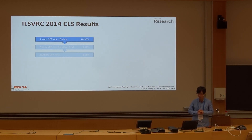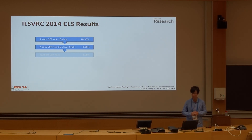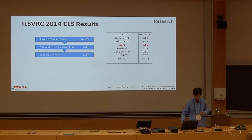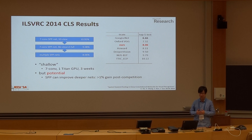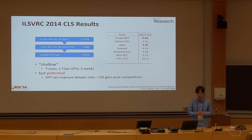For the classification competition, we use the 7-layer convolutional SPPNet, and using the standard 10-crop testing, the error is about 11%. When we significantly increase the number of views and scales, the number reduces to about 9%. After model averaging, the number reduces to about 8%. This is the entry we submitted to the competition, which ranked third. Our network is a relatively shallow one — at least compared with GoogLeNet and Oxford's results — it only has seven convolutional layers, and we can train this model on a single Titan GPU within three to four weeks. Because our network is shallow, we believe there is potential, as we have many experiments showing that SPP can improve all network structures independent of their designs.